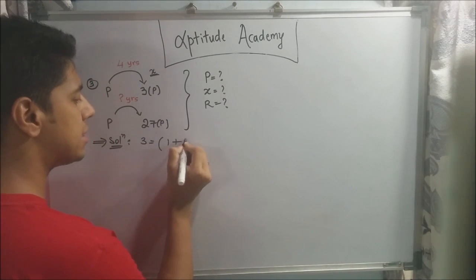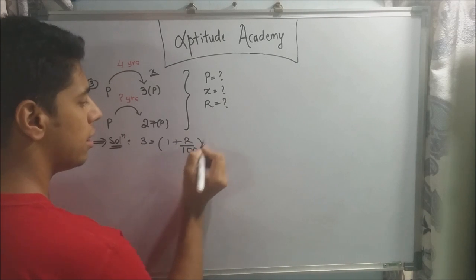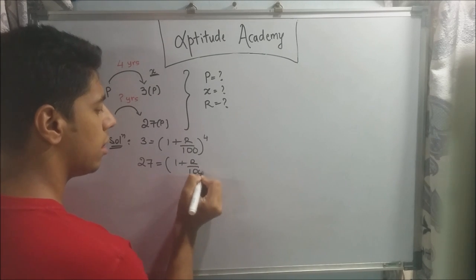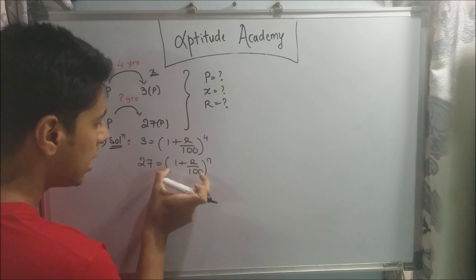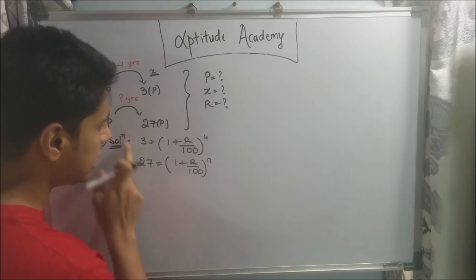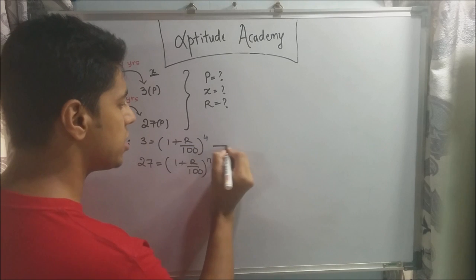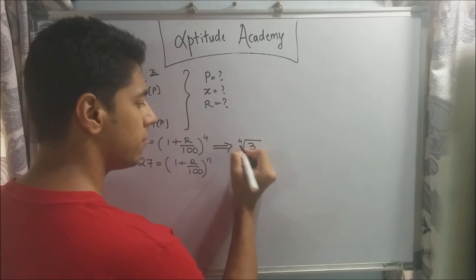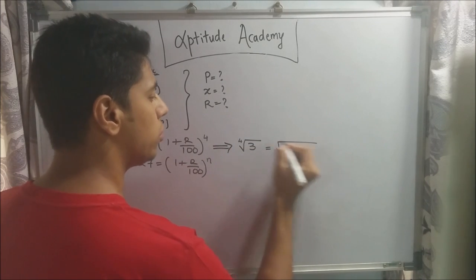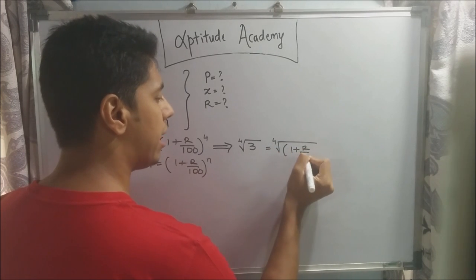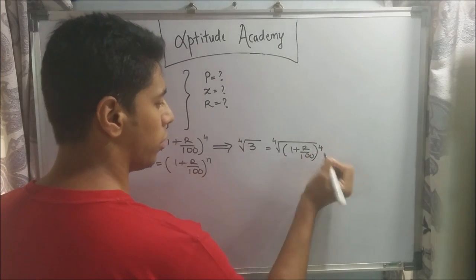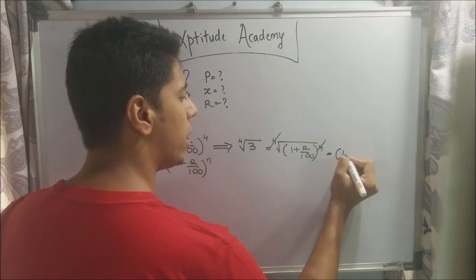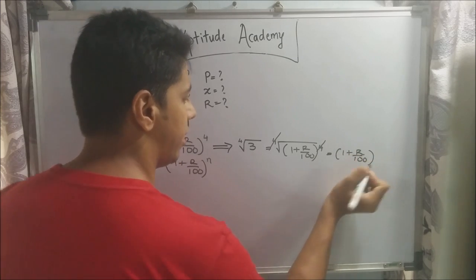Instead, rewrite the equations: 3 = (1 + R/100)^4, and 27 = (1 + R/100)^N. From the first equation, take the 4th root of both sides: 4th root of 3 = (1 + R/100). So (1 + R/100) = 3^(1/4), since the 4th root of something raised to 4 cancels off.